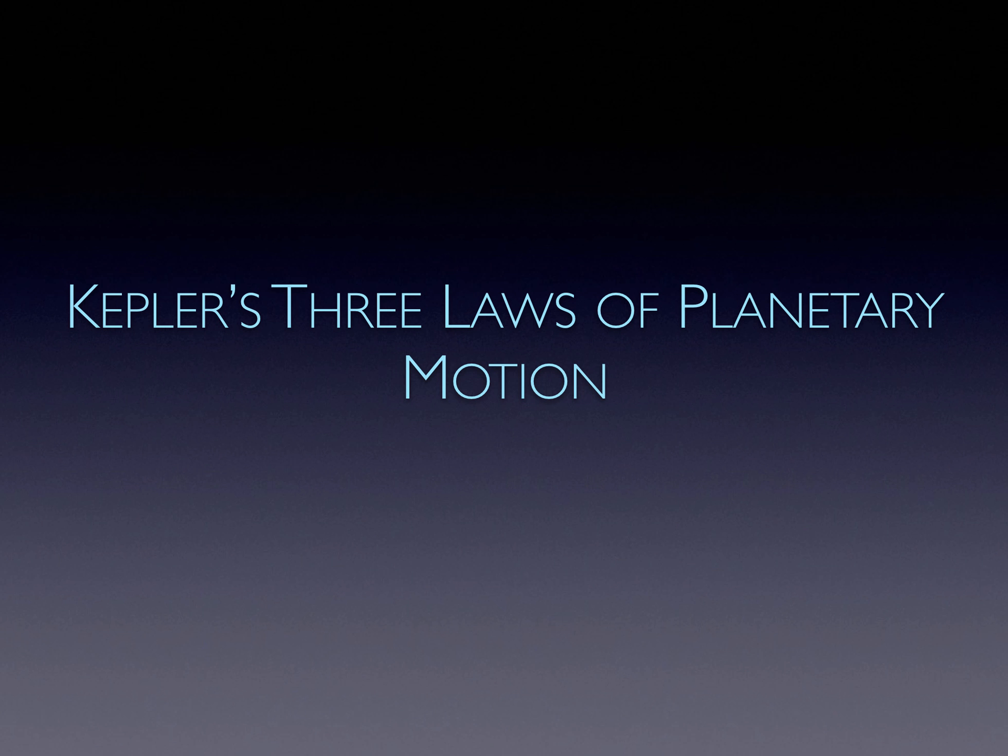In the early 17th century, Johannes Kepler published his Laws of Planetary Motion. These are powerful descriptive laws that describe the shape of planetary orbits and motion of planets along those orbits, but did not reveal any deeper explanation as to a cause.